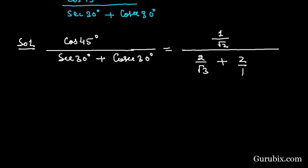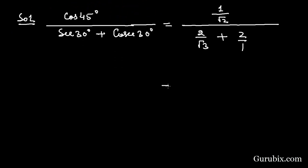Now we shall further solve this value. This equals 1 over square root of 2. We shall take LCM in the denominator, then we have 2 plus 2 square root of 3 over square root of 3.